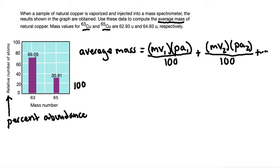It's basically just showing that we would have 69.09 percent of our mass number 63 and 30.91 percent of our mass number 65 that's inside a copper sample just in nature in general. That's what this relative number of atoms is giving us, is our percent abundance.